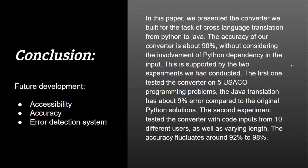In conclusion, in this paper we present a converter built for the task of cross-language translation among programming languages, more specifically from the widely-used Python to Java. Our converter takes in Python source code and outputs Java source code as close as possible to the original. The converter is an algorithm handcrafted in Python, and the philosophy behind it is enumeration — testing out every possible structure contained in a Python code. The translation process is done line by line, with the algorithm detecting certain structures in Python code and turning each piece into a corresponding Java version. The accuracy of our converter is about 90%, without considering Python dependencies in the input.